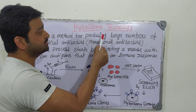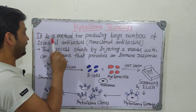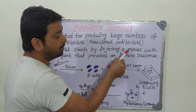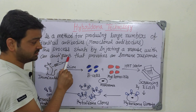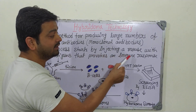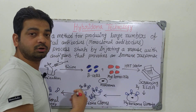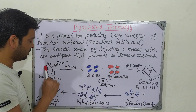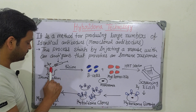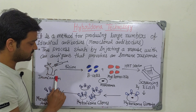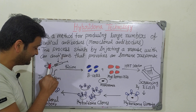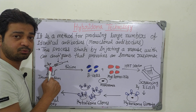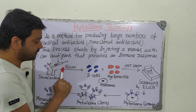This process starts by injecting a mouse with an antigen that provokes an immune response, meaning antibody production will start in the mouse. We take a mouse and do the immunization — injecting the antigen into its body — so that the mouse body will start producing the antibody.